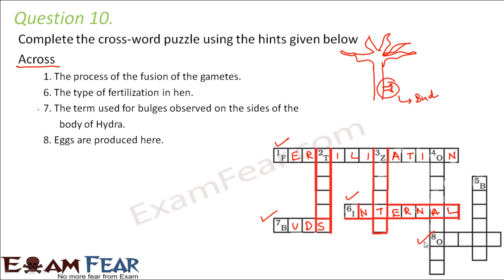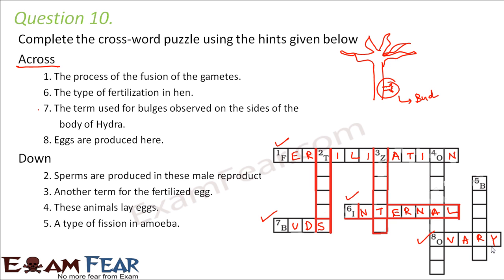Number eight across: eggs are produced here — in human beings, eggs are produced in the ovary, so the answer is ovary. Number two down: sperms are produced in this male reproductive organ — sperms are produced in the testis, so the answer is testis.